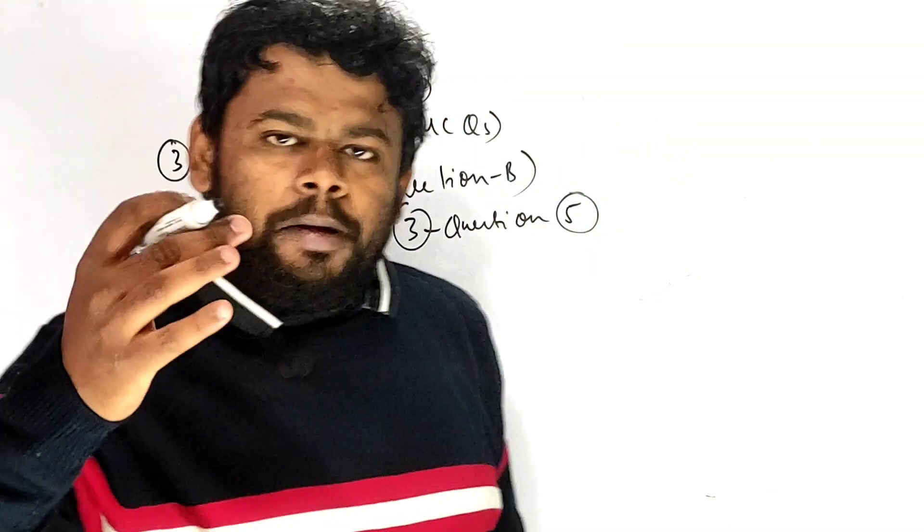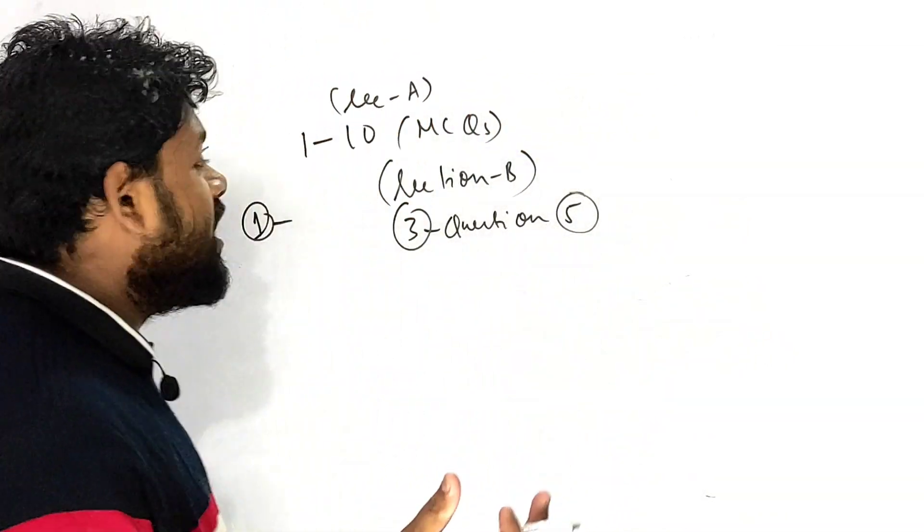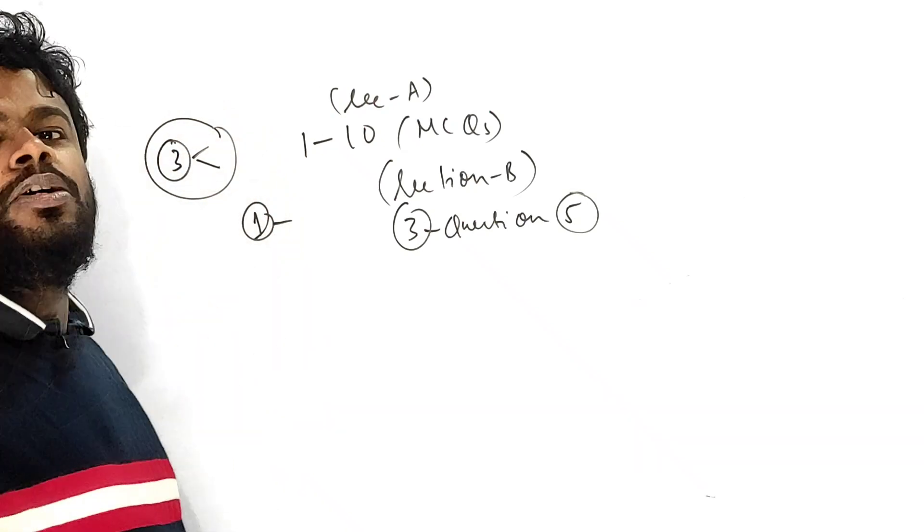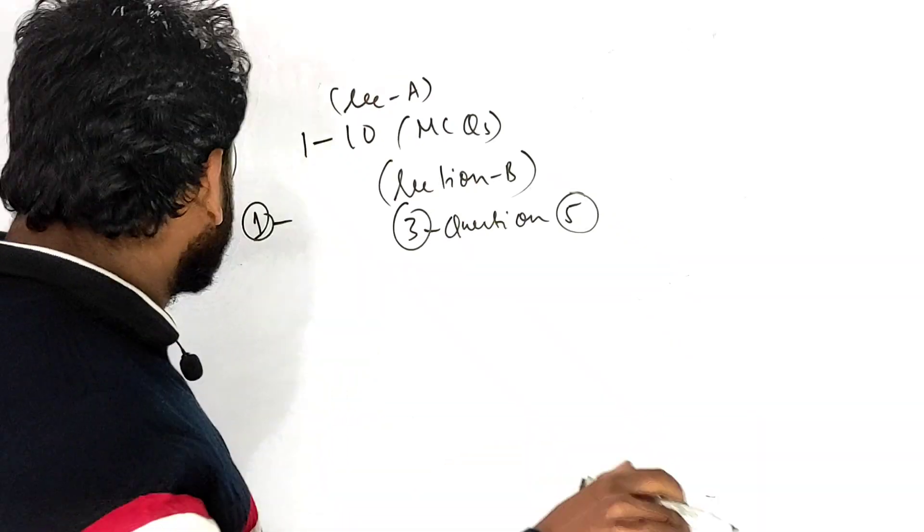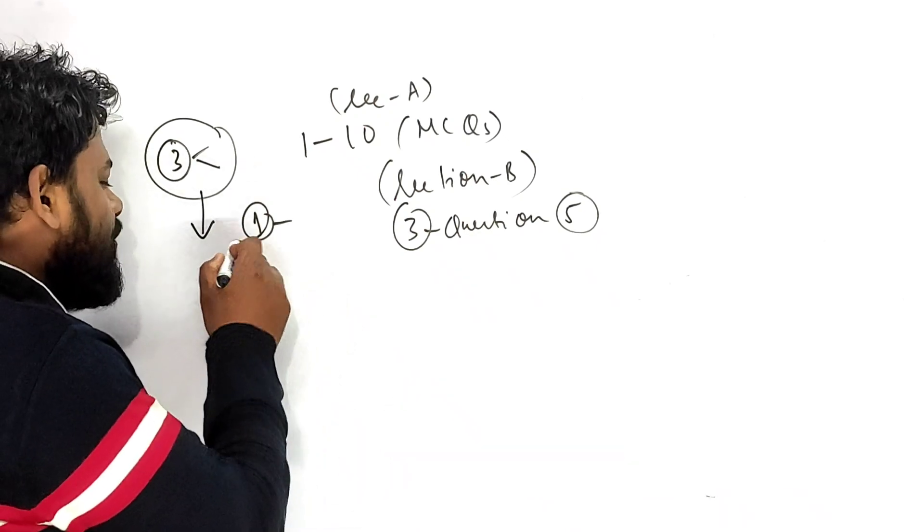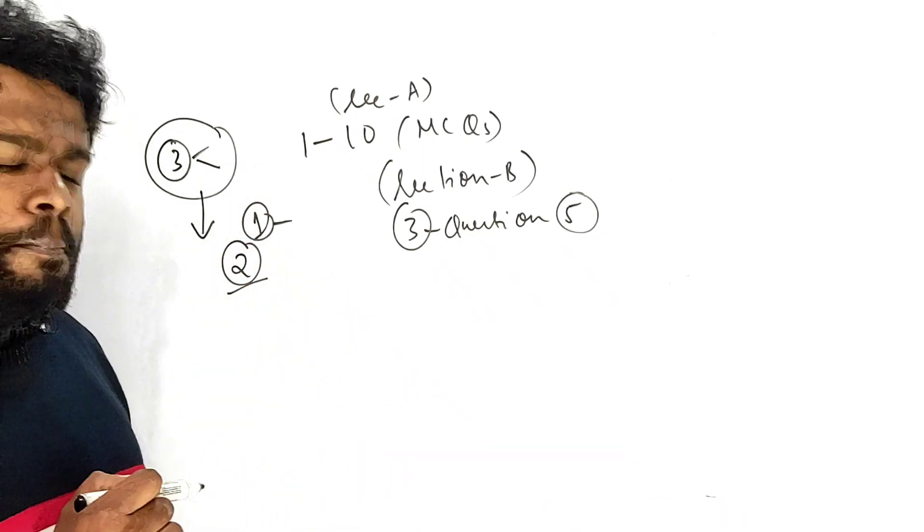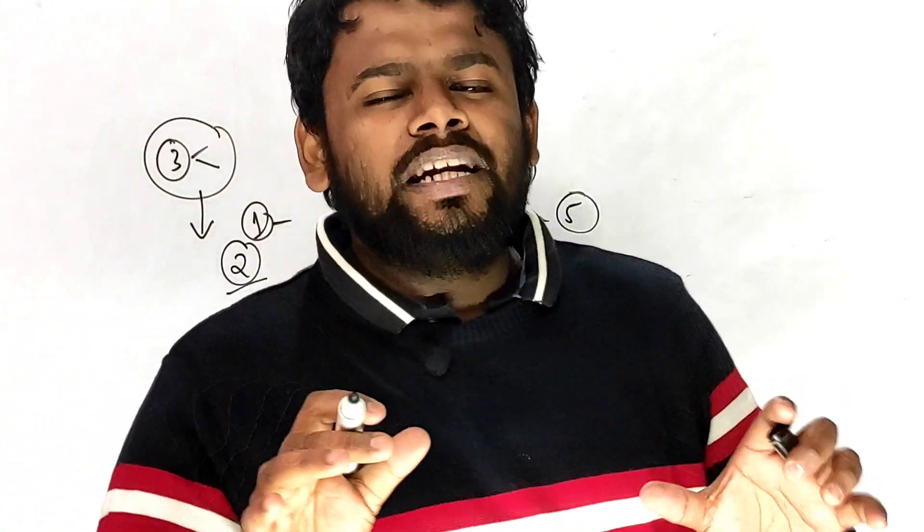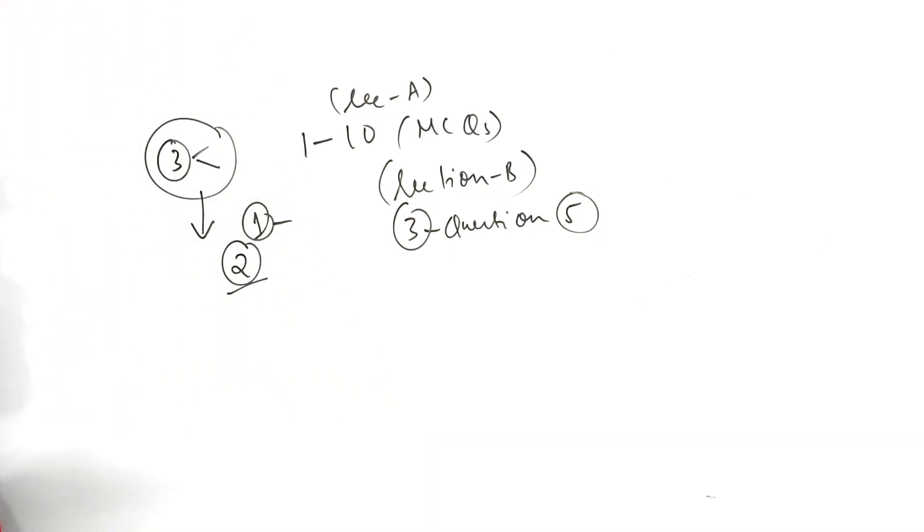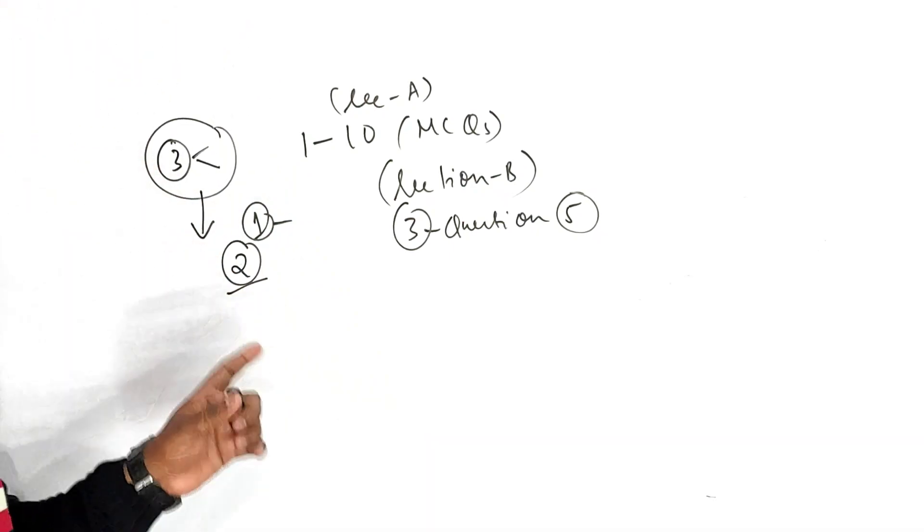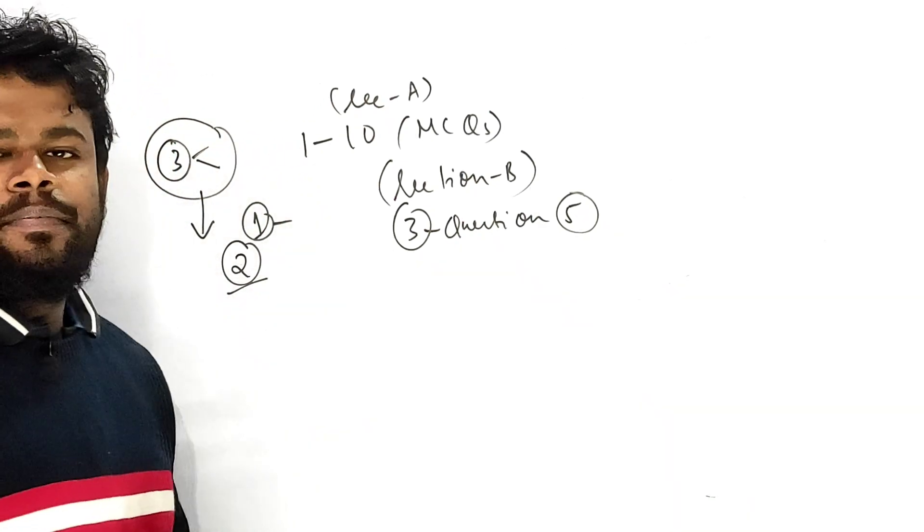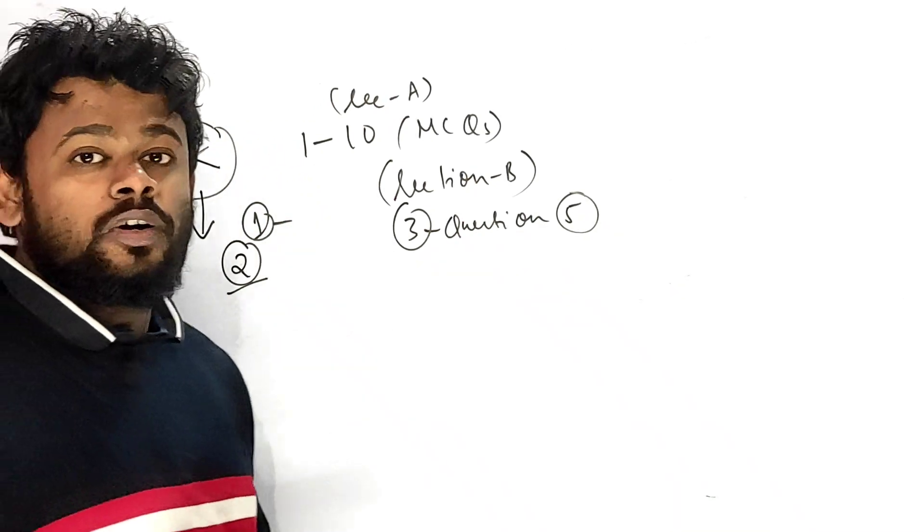But in case of this, suppose three marker question is there in case of history and civics. If you don't know but you will be writing something, that doesn't mean out of the syllabus. If you will be writing, definitely ICAC board members will be giving two marks. This time many liberty is also there, copy checking liberty will be also there.